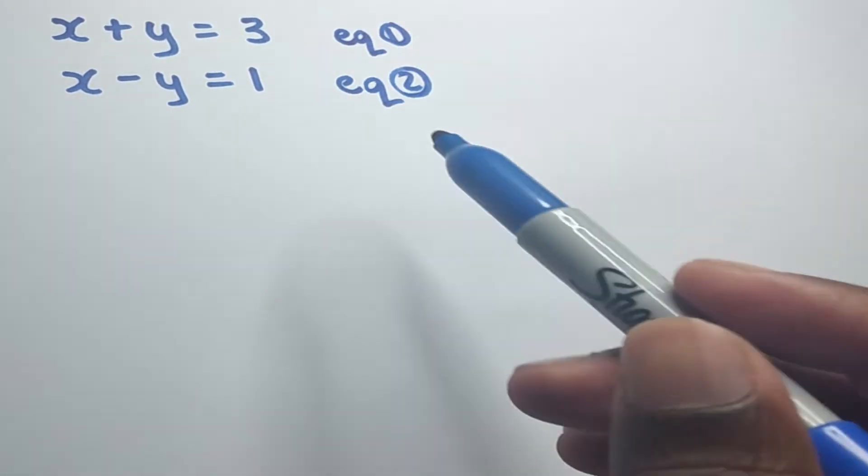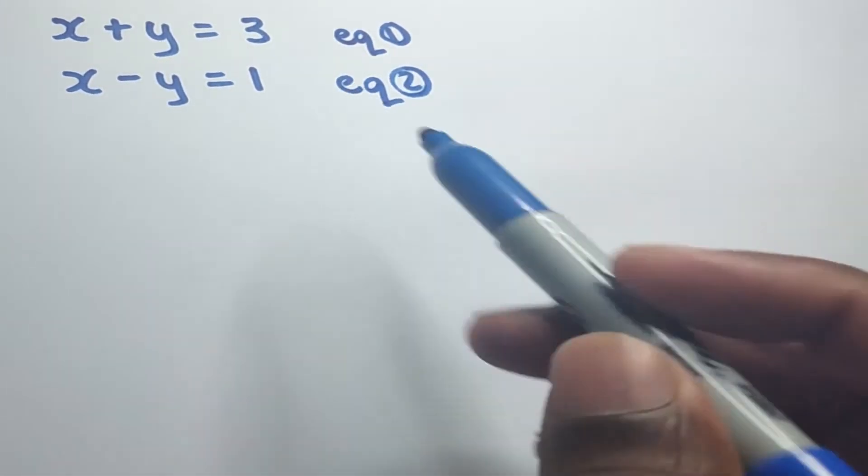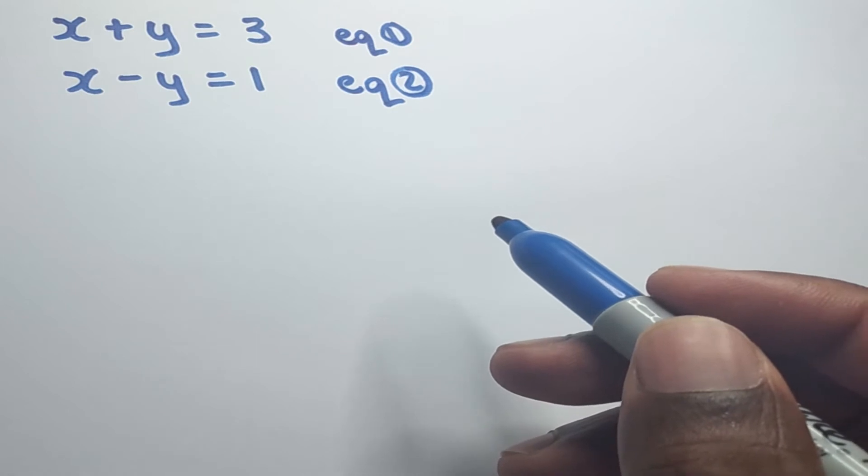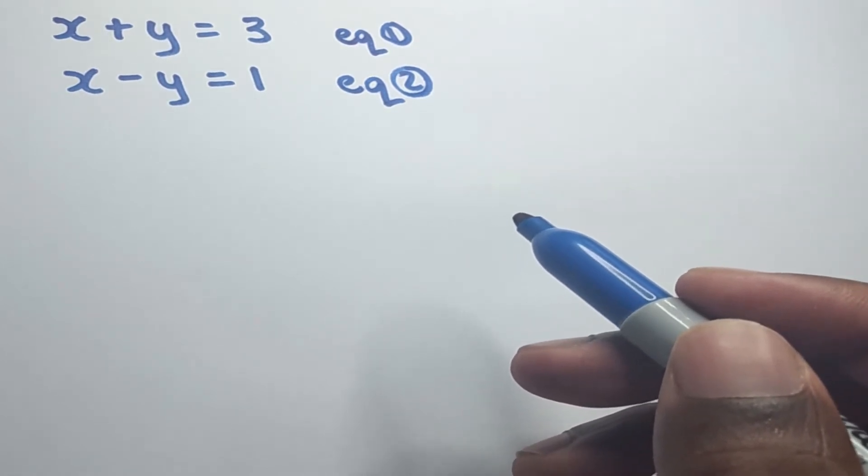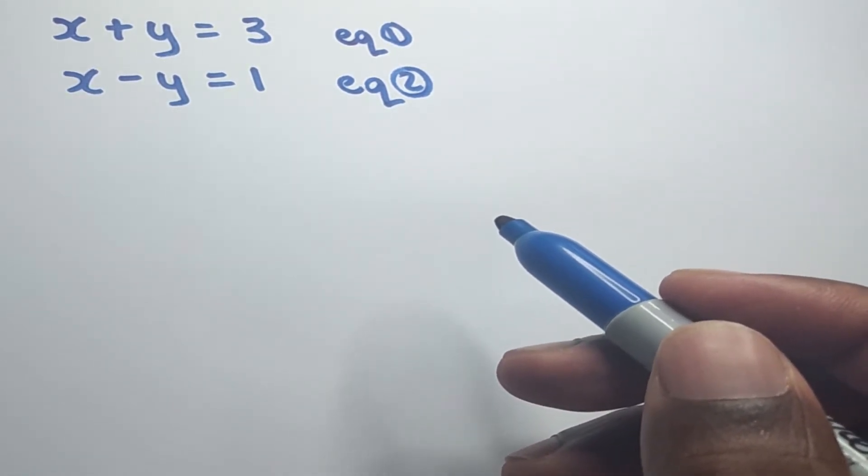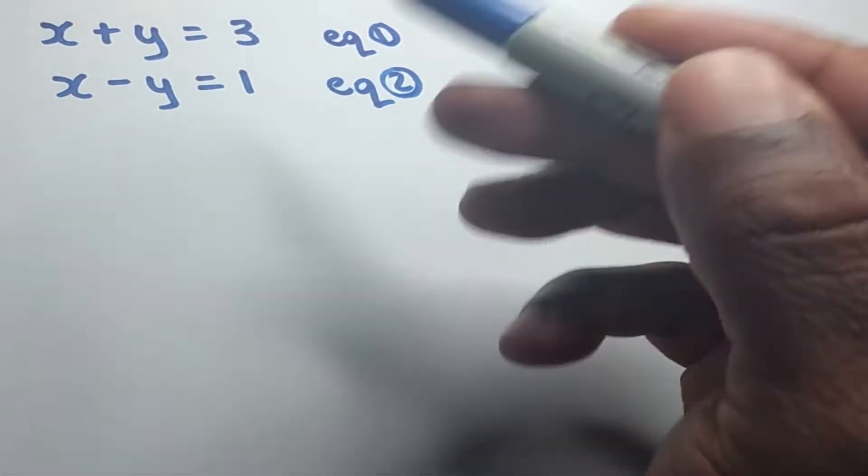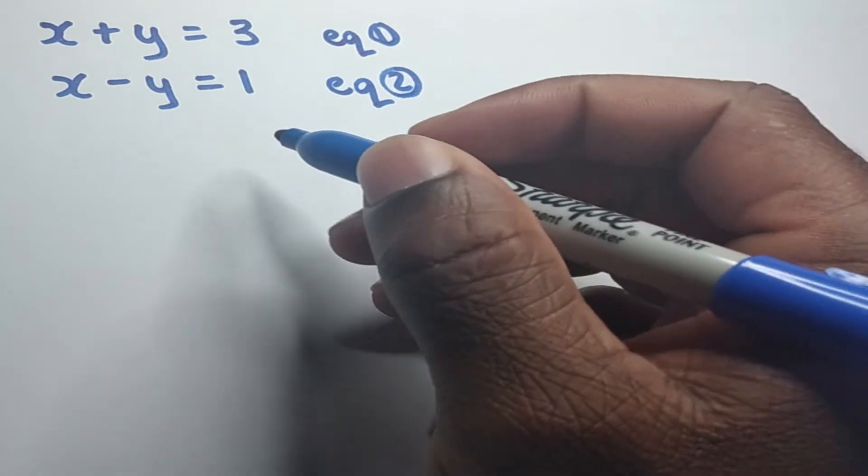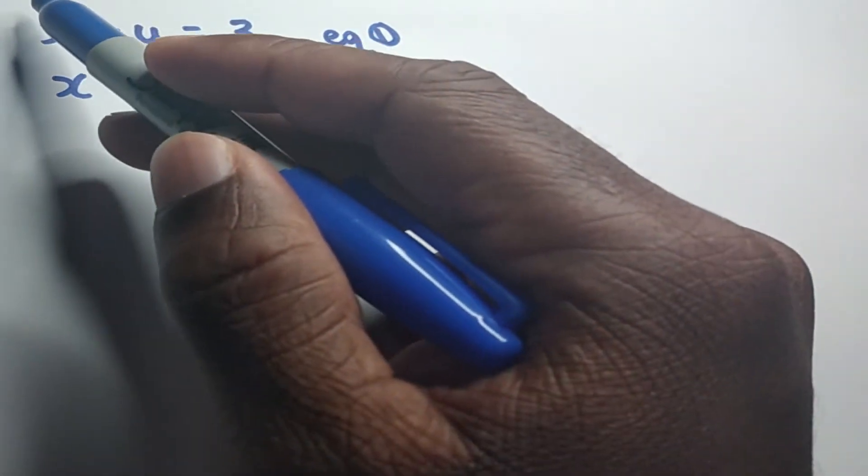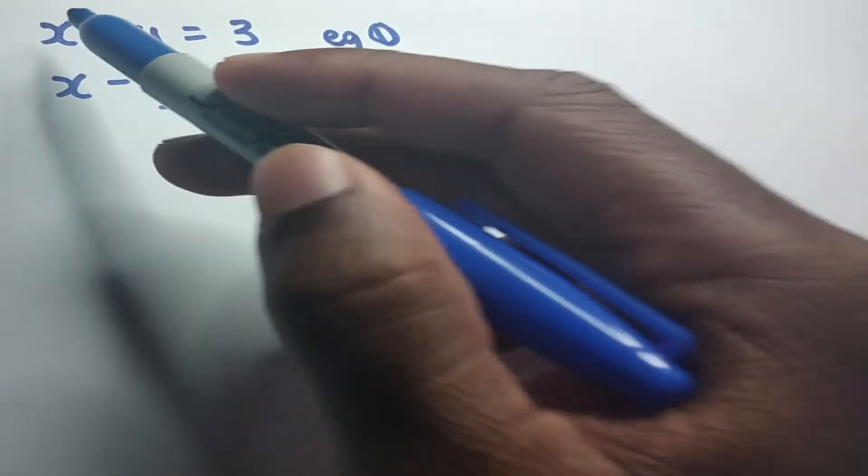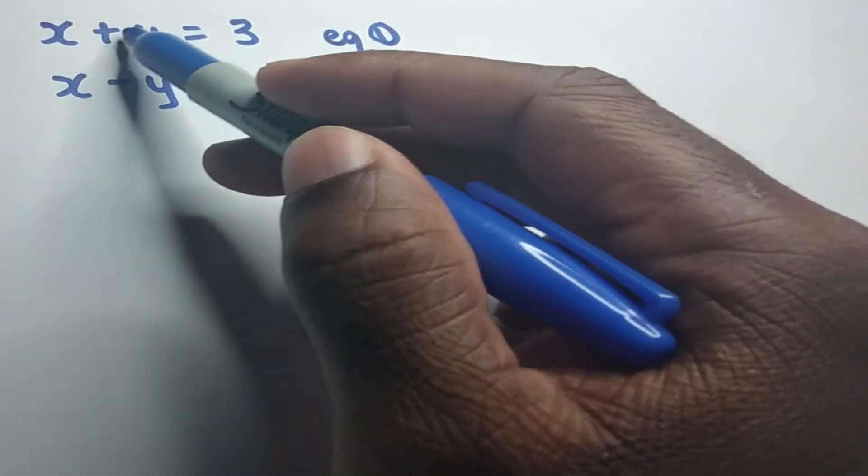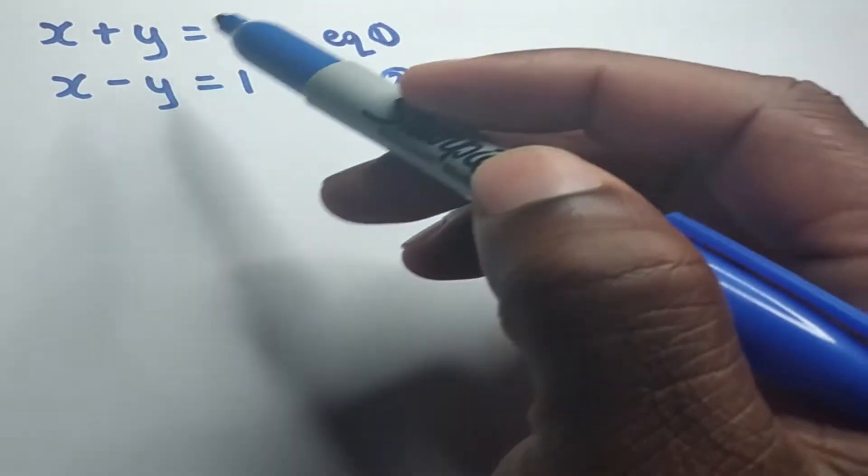And if you want to know how to solve simultaneous equations using the substitution method, I'll have a video of that in the description section below. Now, the first thing that we need before we can progress any further in solving this problem, we need either both x coefficients to be the same or both the y coefficients to be the same.